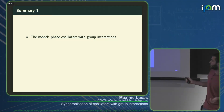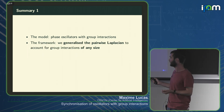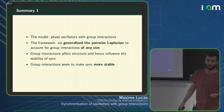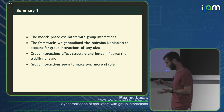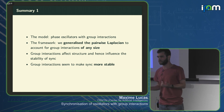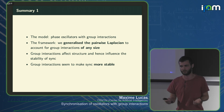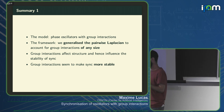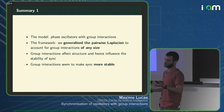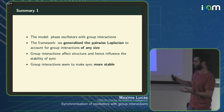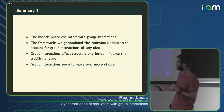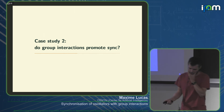Summary for this part: we showed the model with group interactions and generalized the pairwise Laplacian to any group interaction size. We see that it can affect the dynamics. With attractive coupling, including group interactions makes synchronization more stable — but that's somewhat trivial because you're just adding more attractive coupling. The more interesting question is whether group interactions always promote synchronization, which we look at in the second part.